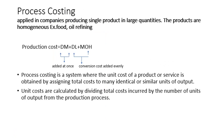Process costing is applied in companies producing a single product in large quantities. The products are all homogeneous, similar, like food and refined oil.